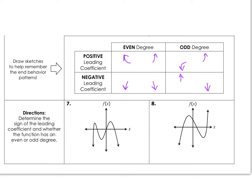Go ahead and analyze examples 7 and 8 — determine if it's an even or odd degree, and whether the leading coefficient is positive or negative. For example 7, both ends go in the same direction, so it's an even degree, and they're both going down, so it's a negative leading coefficient. For example 8, both ends go in opposite directions, so it's an odd degree, and it follows the positive leading coefficient pattern where the left side goes down and the right side goes up.